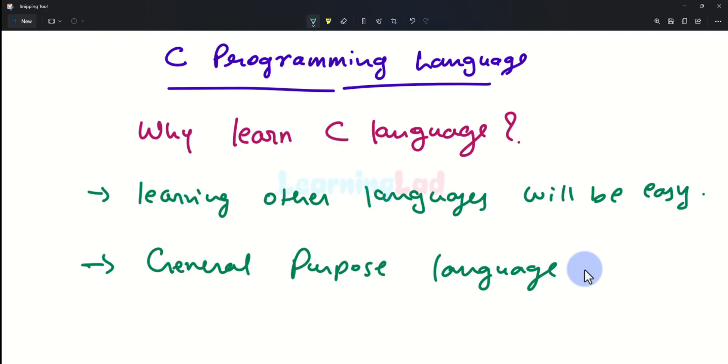And also C is a general purpose programming language, which means that C programming language can be used for creating different variety of applications. So once you know C programming language, you are not limited to a specific field. You can use that knowledge and you can create a variety of applications.